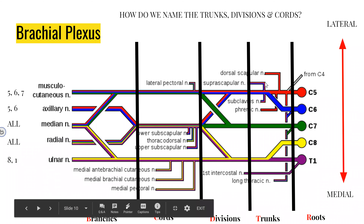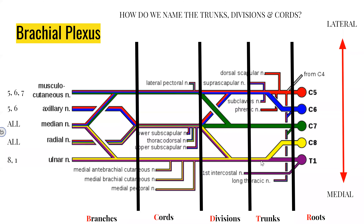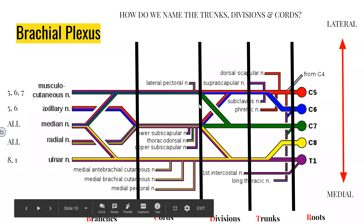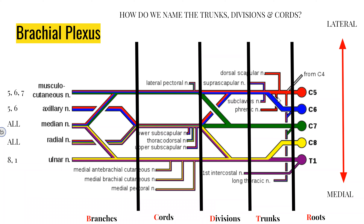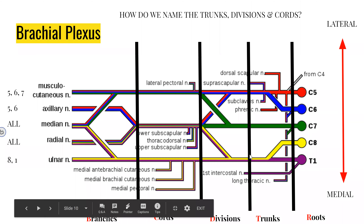Each trunk gives off an anterior and posterior division. The superior trunk gives an anterior branch and a posterior branch; the middle trunk gives an anterior branch and a posterior branch; and the inferior trunk gives an anterior division and a posterior division. So we end up with anterior divisions from the superior, middle and inferior trunks, and posterior divisions from all three merging together.